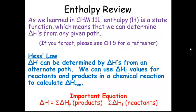Hess's law states that delta H's can be determined from an alternate path. One application of Hess's law is that we can use delta HF values — those are heats of formation for reactants and products — to calculate delta H reaction. We do that by summing up the delta HF values for the products and subtracting the summed delta HF values for the reactants to get the change in enthalpy for the reaction.